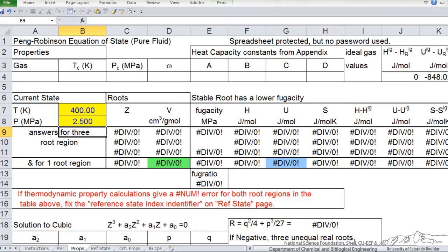So here is the Excel spreadsheet, and what I have done is put in our starting temperature in yellow, and starting pressure in megapascals, and in this spreadsheet I am on the properties page.